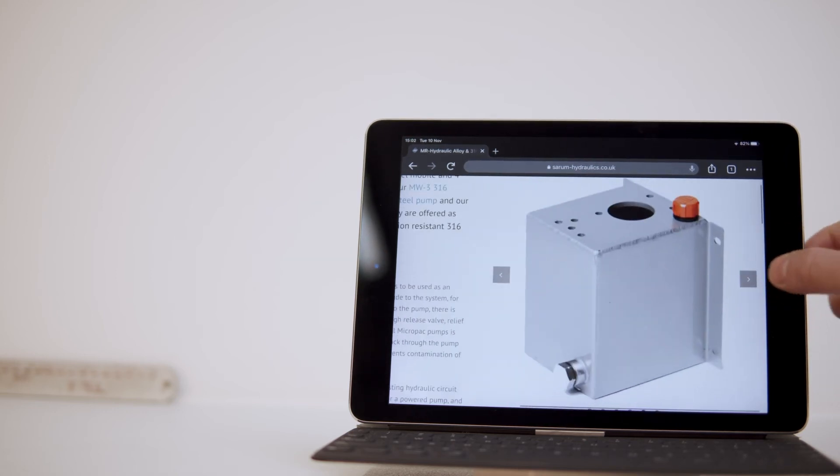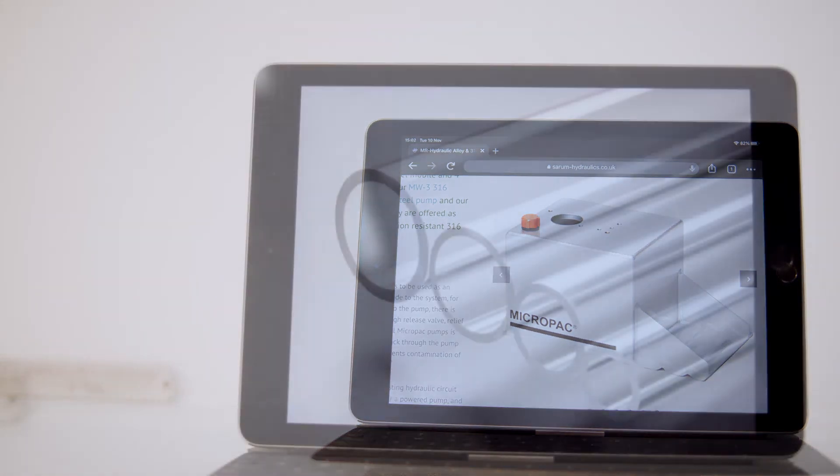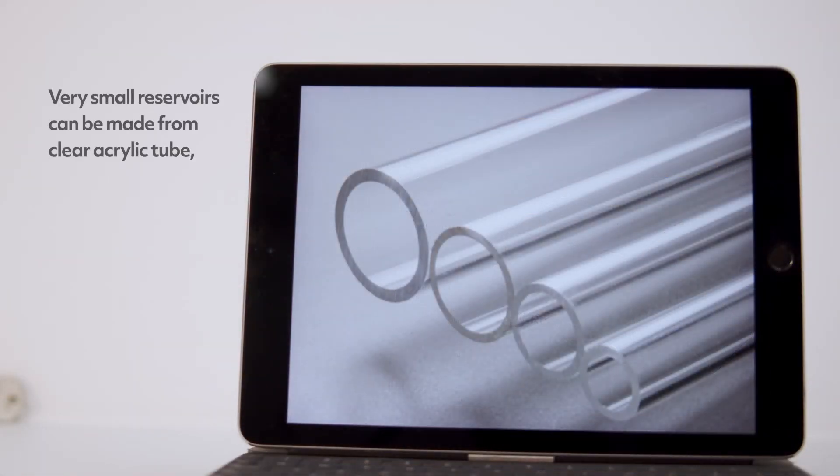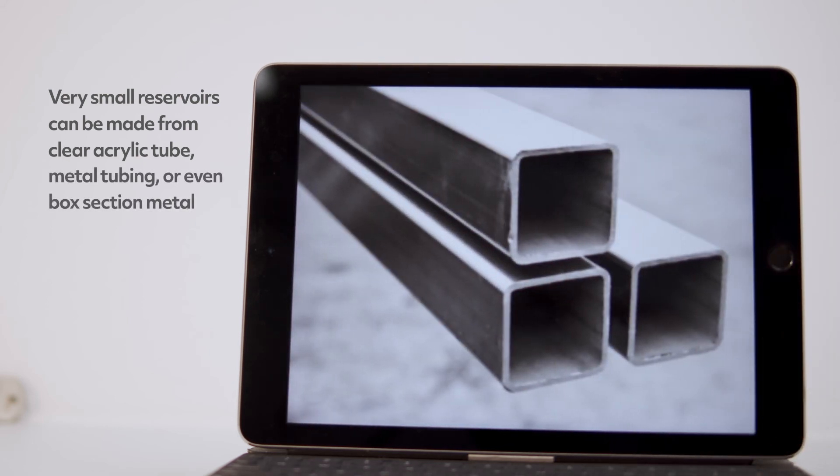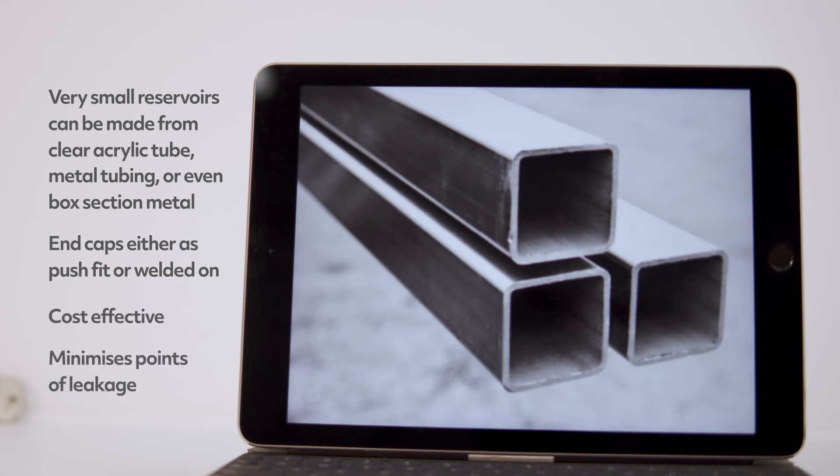If you have to make one, here are some key tips surrounding the manufacturing of your reservoir unit. Very small reservoirs can be made from clear acrylic tube, metal tubing or even box section metal, with end caps either as push-fit or welded on. This is very cost-effective and minimizes points of leakage and failure.